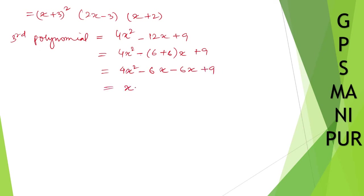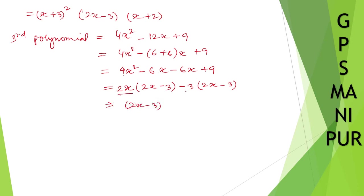Taking 2x common from the first two gives (2x-3), and taking minus 3 common from the last two also gives (2x-3). So 4x squared minus 12x plus 9 equals (2x-3)(2x-3), which is (2x-3) squared. That's all for the three polynomials. Now let us find the HCF.